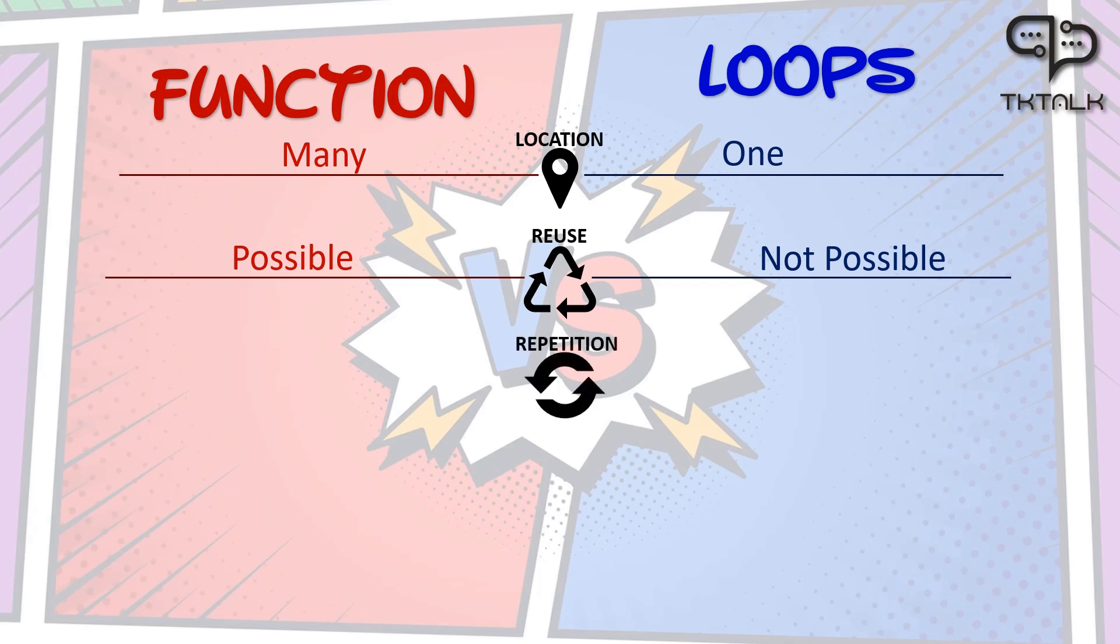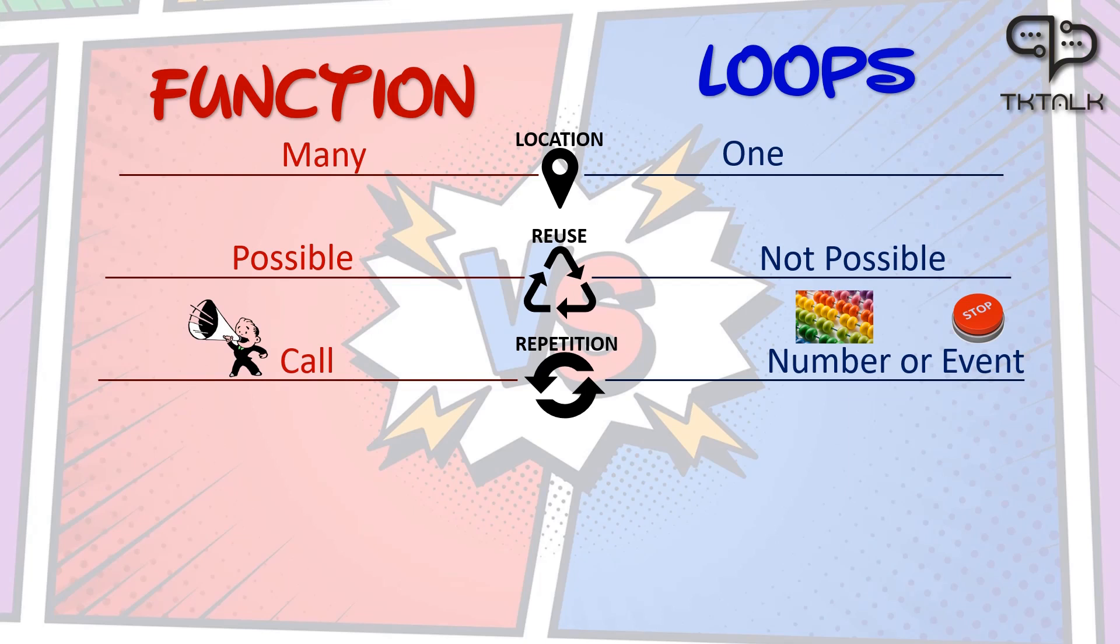Repetition: When we repeat code lines in loops, number of repetitions in for loops is determined by a number, and in while loops is determined by stop event as explained. On the other hand, number of times reusing or calling a function depends only on the number of calls programming decides.